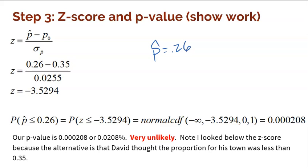The p-value is the probability of a sample being less than 0.26 — even lower or more extreme — equivalent to finding a Z-score less than -3.5294. Using normal CDF on the calculator gives a very, very unlikely probability. This is definitely a significant sample. This sample of 0.26 should not have occurred, but it did.